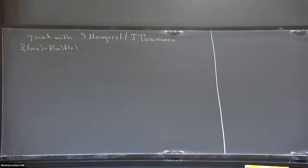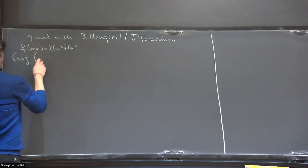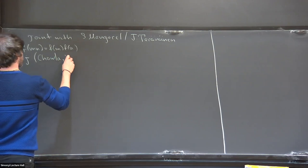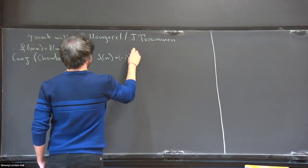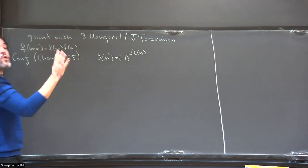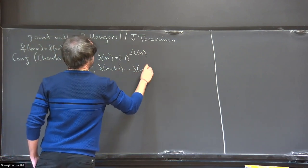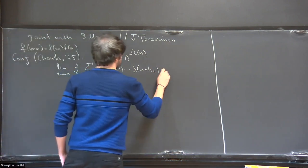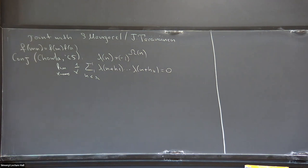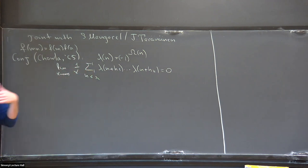The driving conjecture that has been popularized recently is the conjecture of Chowla from 1965, which says that the correlations of the Liouville function — defined as minus one to the number of prime factors — all vanish. If you take all the linear shifts, the correlation vanishes. A uniform version of this conjecture would imply the twin prime conjecture and many other things.